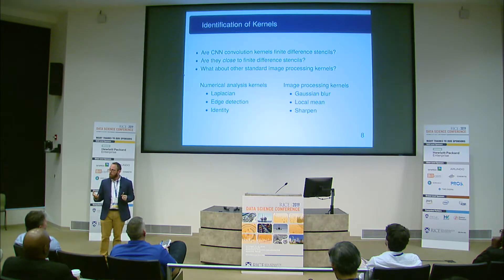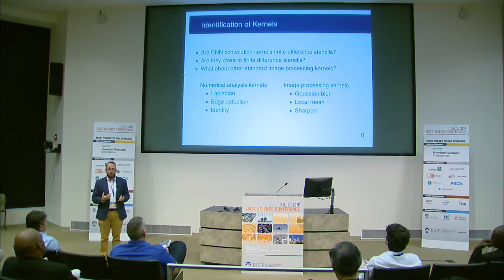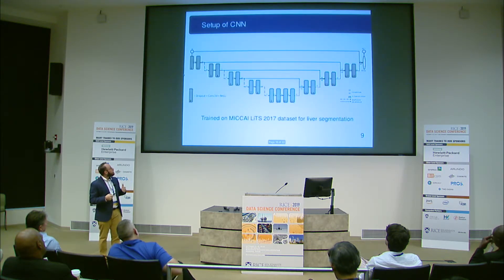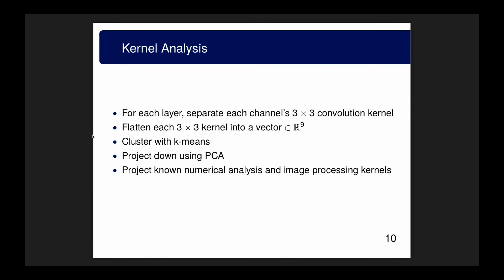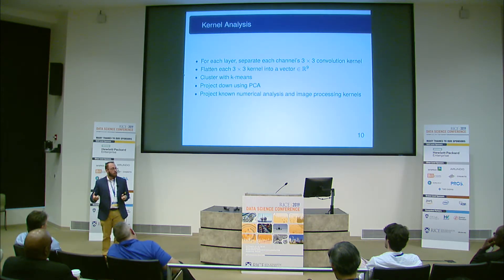What does a convolutional neural network actually do? What are the kernels that the U-Net learned that differ from both the level set network and the level set equation? Are those kernels the same, different, or similar? And what about other kernels — does a CNN use some of the other standard feature augmentation operations, like sharpening, blurring, or local means? To test this, we take the kernels learned from the U-Net, separate them into 3×3 slices, flatten them into vectors, and cluster that data to see where these clusters fall.